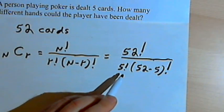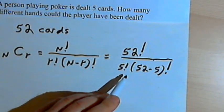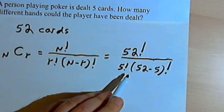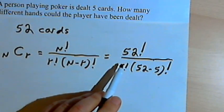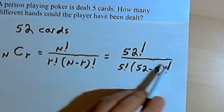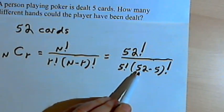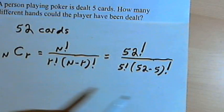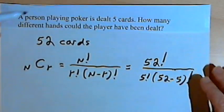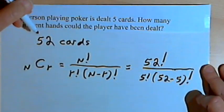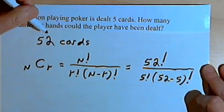And once again, probably the easiest thing to do for something like this, because we're going to deal with fairly large numbers, is you could put this into your calculator. 52 factorial divided by 5 factorial times 52 minus 5 factorial. And find out how many different possible hands this person could have gotten.